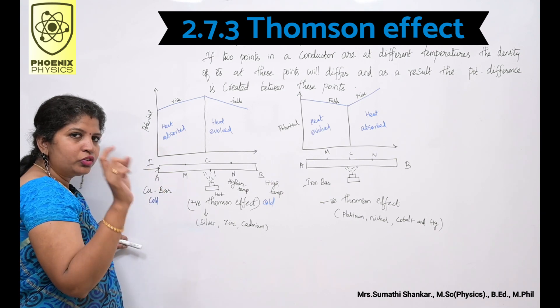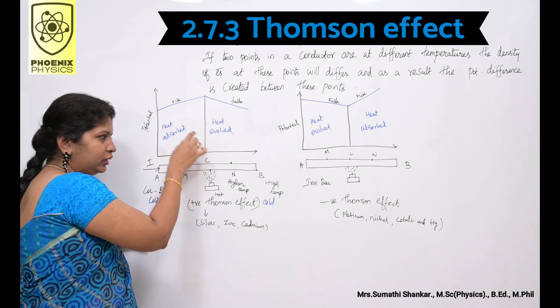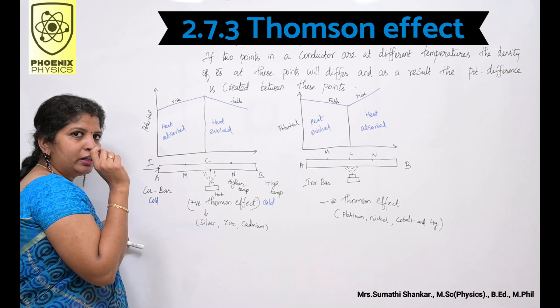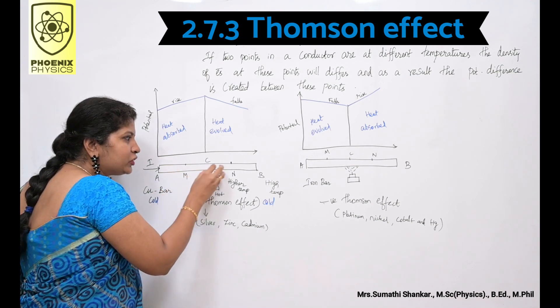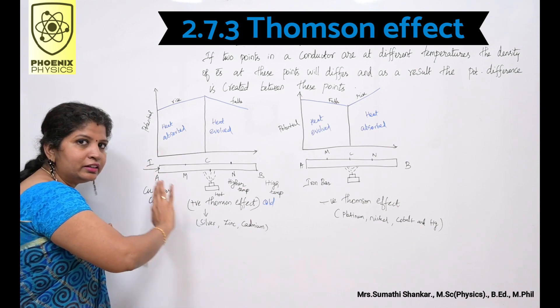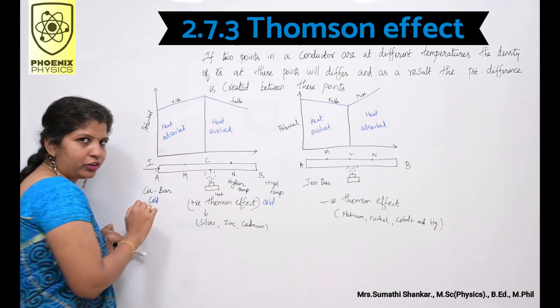So, what is your conclusion? From A to C, heat is absorbed. From C to B, heat is evolved. Here, heat is transferred due to the current flow in the direction of current. This is known as positive Thomson effect.